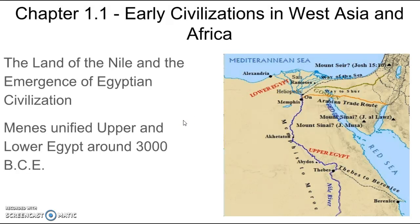The next section of the chapter is entitled 'The Land of the Nile and the Emergence of Egyptian Civilization.' Menes unified Upper and Lower Egypt around 3000 BCE. Menes is often credited as being the first pharaoh, and his reign started a line of pharaohs that would last almost 3,000 years in Egyptian history.